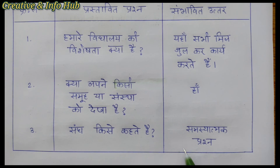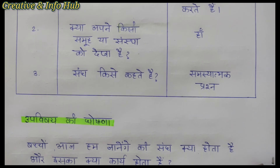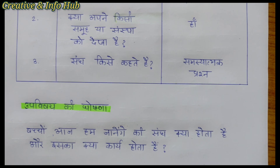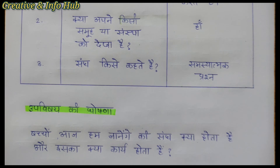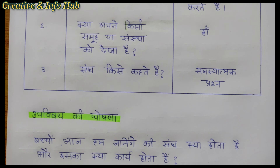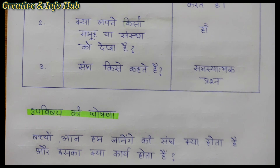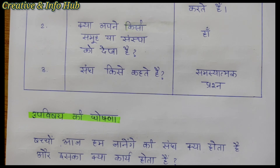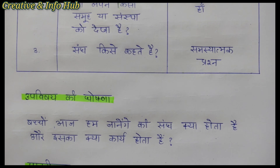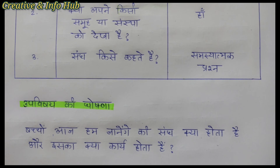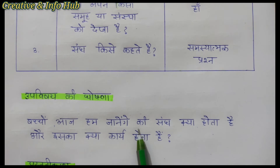After Section Vidhi, we write Poorv Gyan Parikshan — Prior Knowledge Testing. As the heading suggests, this means testing the previous knowledge of students. We test how much knowledge students already have about the topic. It is important not to directly jump to advanced content if children have no prior understanding — that would create confusion. We start from basics. For this, we create a neat table where we ask three questions.